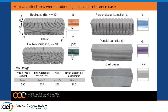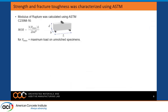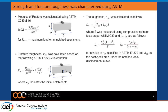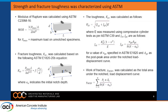For all of our tests, we created beams using the Bouligand architecture and double Bouligand architecture at a pitch angle of 10 degrees, based on previous testing. We also tested perpendicular lamellar and parallel lamellar architectures — comparable to conventionally printed shapes — defined relative to the beam length, along with a cast reference case. Measurements follow ASTM standards: modulus of rupture per ASTM C239M, fracture toughness per ASTM E1820 measuring both K_IC and K_JC, and work of fracture. All samples were tested at seven days at a loading rate of 0.5 millimeters per minute.